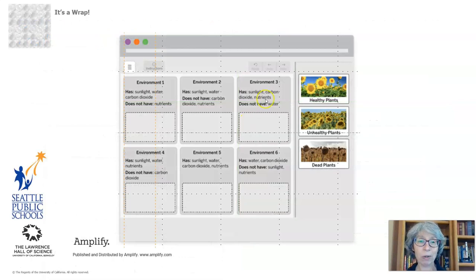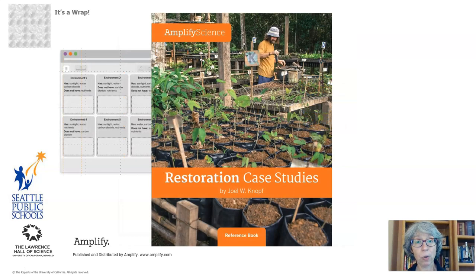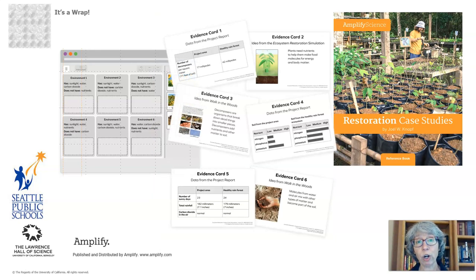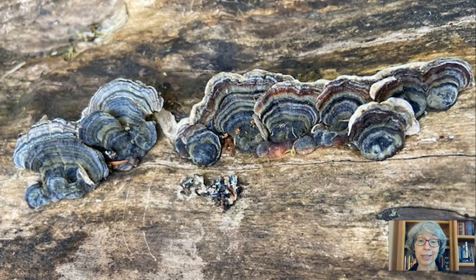That's a wrap. We looked at an environment tool to decide what kind of plants would thrive under different conditions. We also looked at two case studies on the impact of humans in an ecosystem and how we can restore the nutrients in those ecosystems. And we prepared to write a scientific argument by looking at different evidence cards. That writing assignment will happen in the next lesson. Thank you so much for joining me and I will see you for our last lesson. Bye for now.